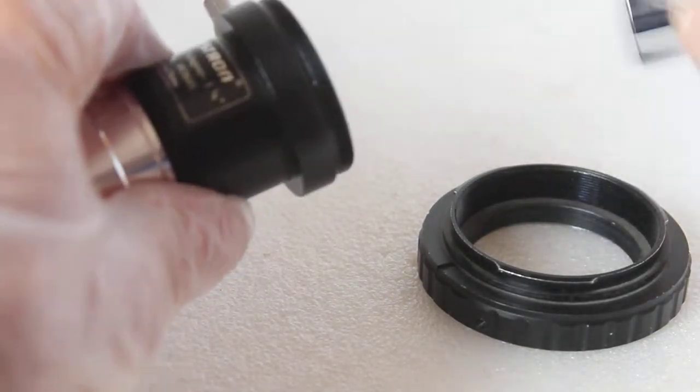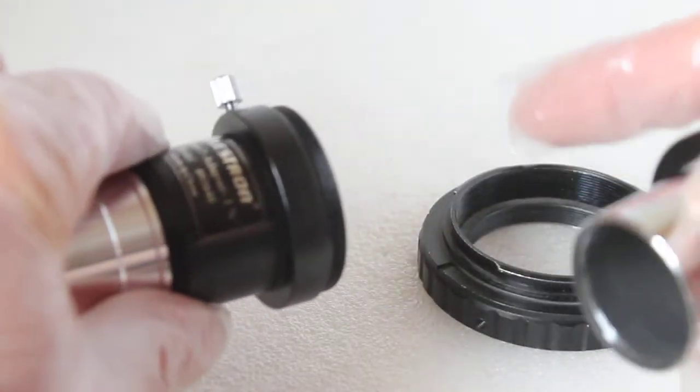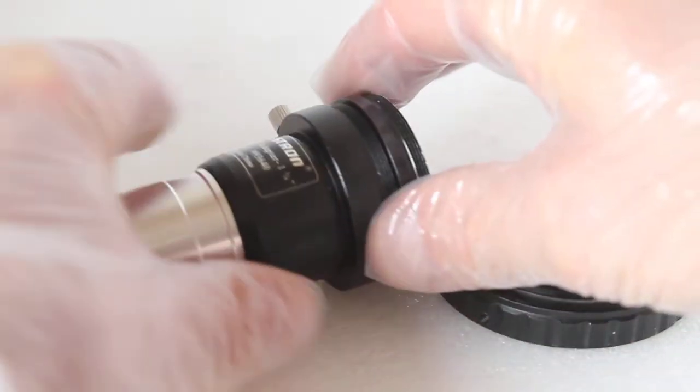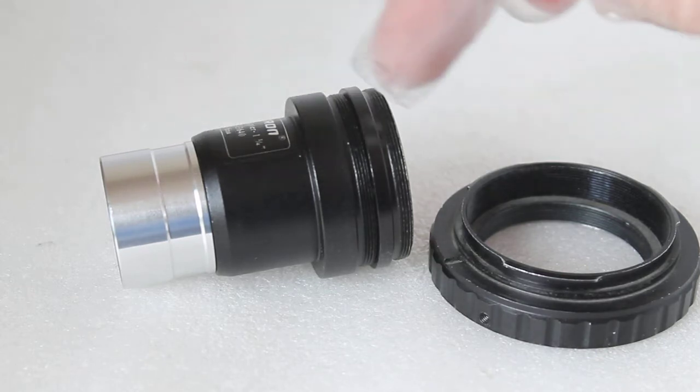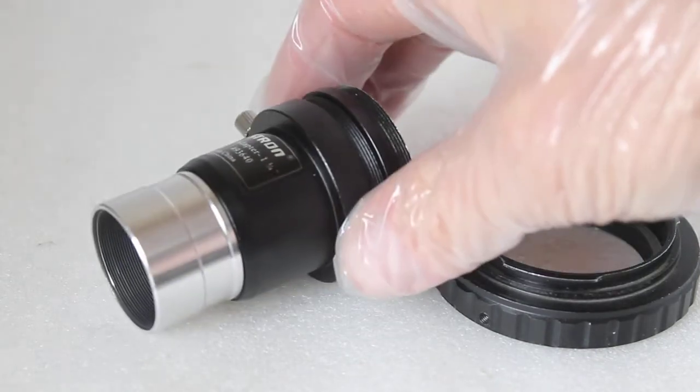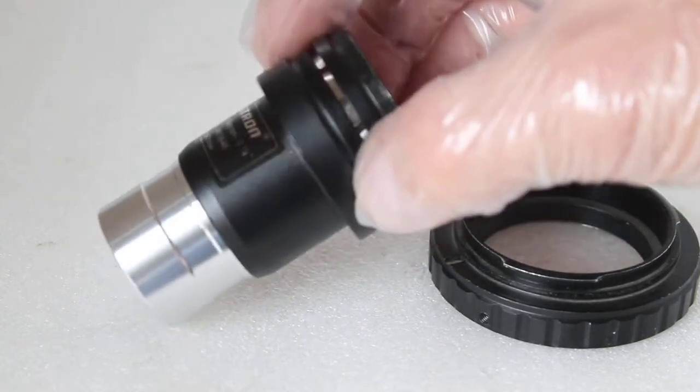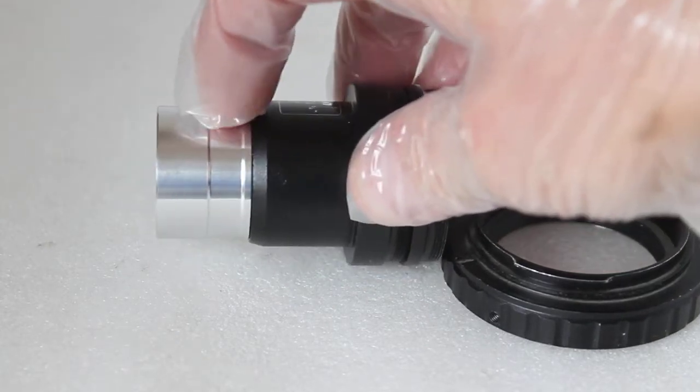Well, you don't actually need to put this T adapter in here because this has already got a T thread, but maybe your Barlow has not got that T thread in which case you would do that. And so what you have there is about 40 millimeters more outward travel so you should then be able to get infinity focus and that has solved the problem.